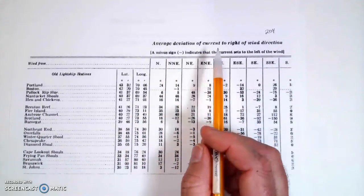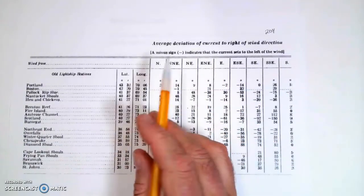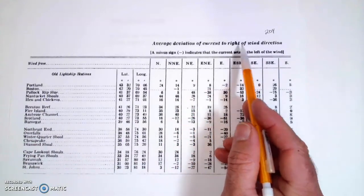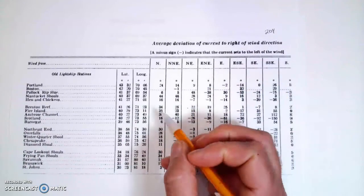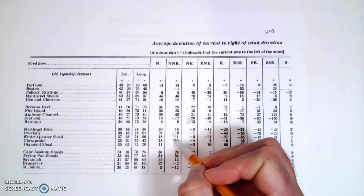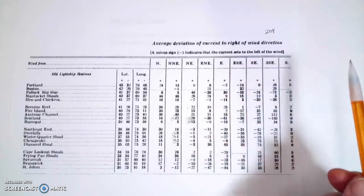So that means that the wind, if the wind, whatever the wind is blowing, if it's blowing north-northeast, the current is going to be 46 degrees to the right of the wind direction. So now, you'll notice there, though, that there are these, in some places, there are minus signs. Whenever you see a minus sign, that means it's actually not to the right, it's to the left.